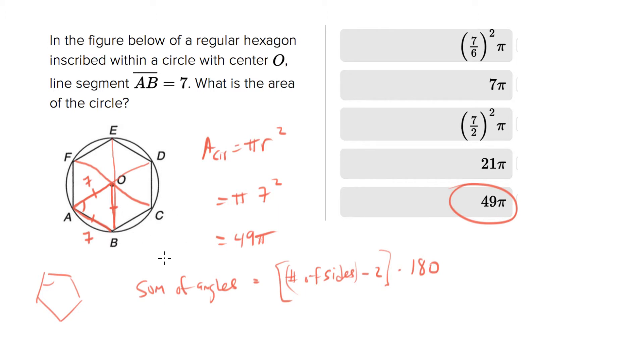So in this particular case, we have the number of sides is six. Six minus two is four, so the sum of the angles should be equal to four times 180. So that is 720.